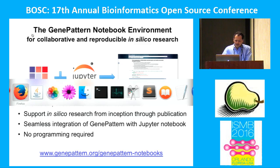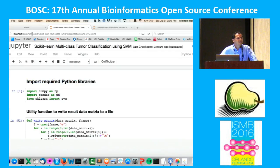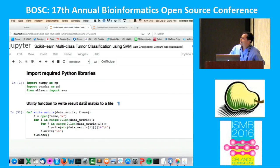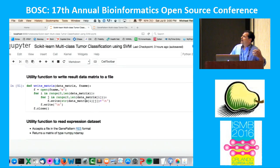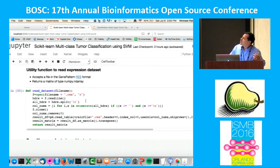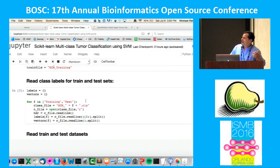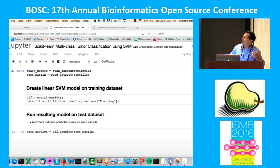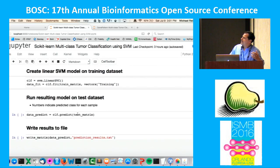I'm going to show you two notebooks that implement the same analysis: taking a dataset of 14 different cancer types, training a support vector machines model to create a predictor, and then running that predictor on a separate test set. Here is a Jupyter notebook doing this via straight Python code. We need to import required Python libraries, utility functions to read and write data, read class label datasets, read train and test datasets, create our SVM model on the training dataset, and run the model on the test dataset.